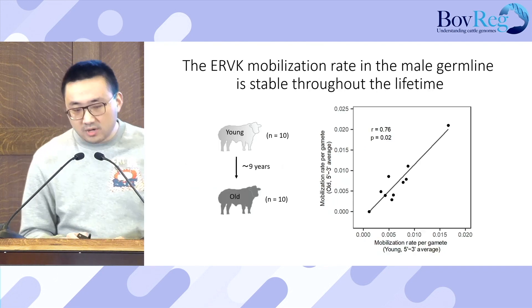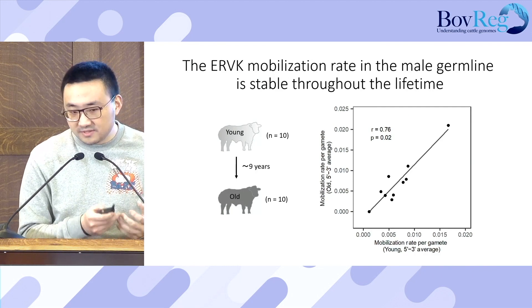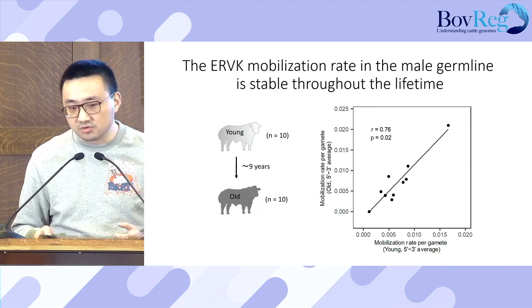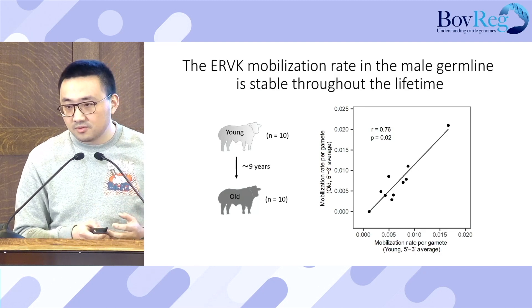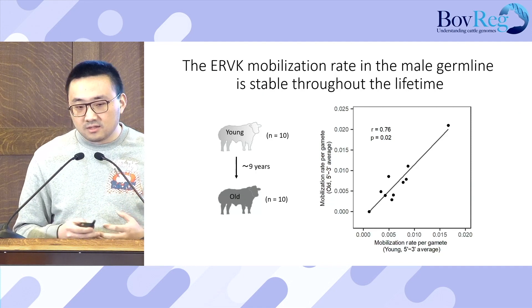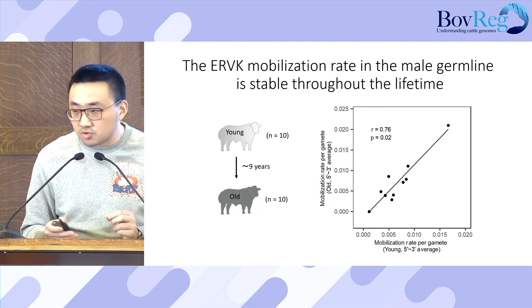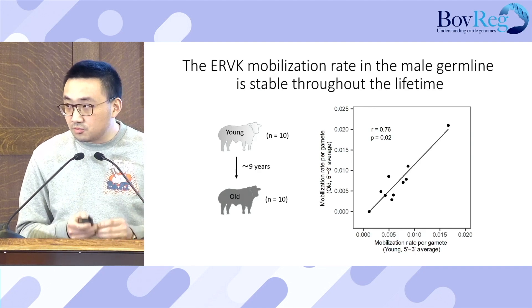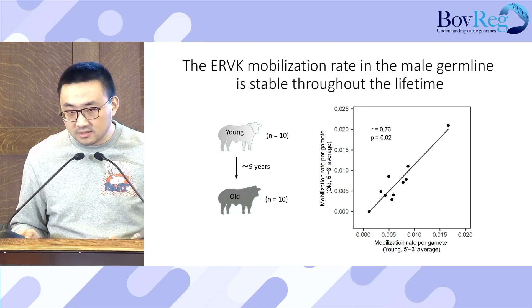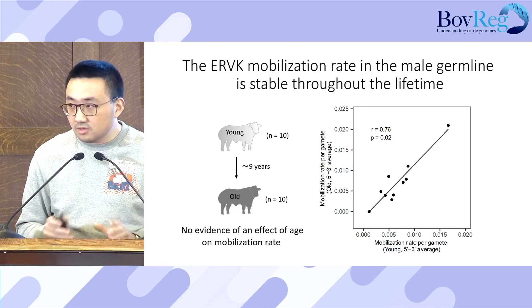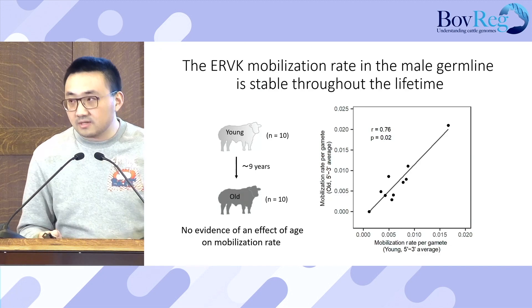We were fortunate enough to obtain sperm straws from the same ten bulls at nine years old, allowing us to test a possible age effect. Strikingly, the mobilization rate at young and older age are highly correlated, suggesting there is no age effect—contrasting with point mutation rates.